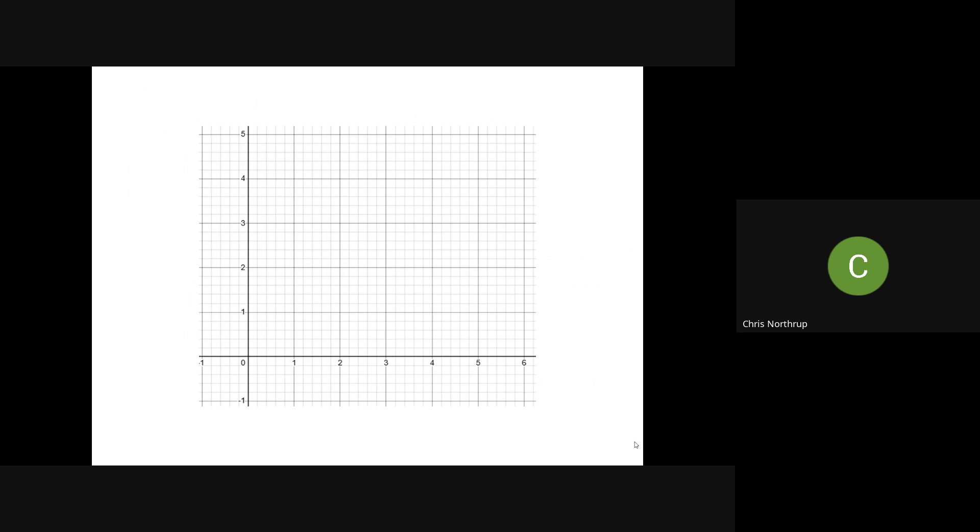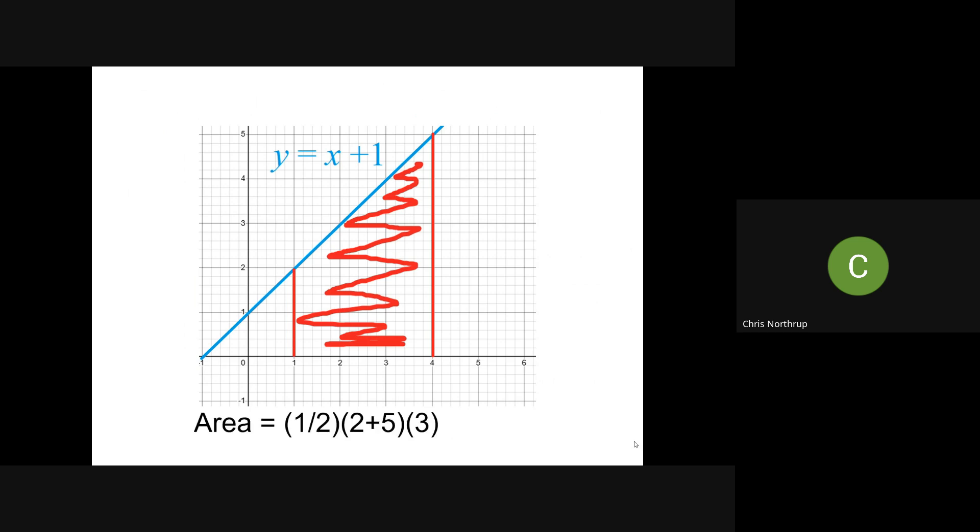Let's say that I'm looking at just a basic linear function, y equals x plus one, and I wanted to find the area from when x equals one to x equals four. So I can do that using geometry. This is a trapezoid, so I could just use the area of a trapezoid formula, or if you want to split that into a rectangle and a triangle, you're going to get, in either case, 10.5.